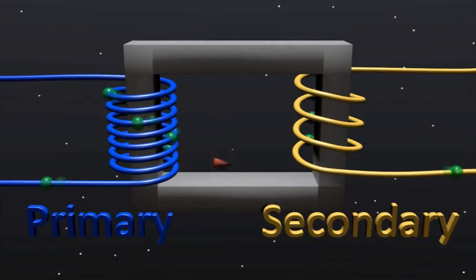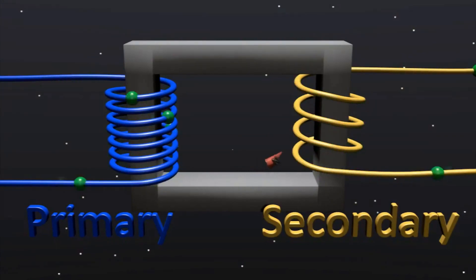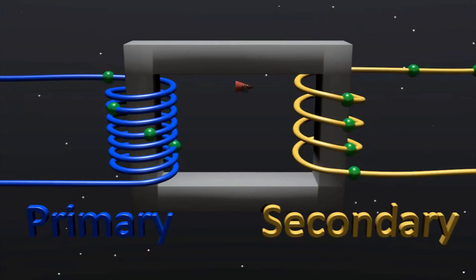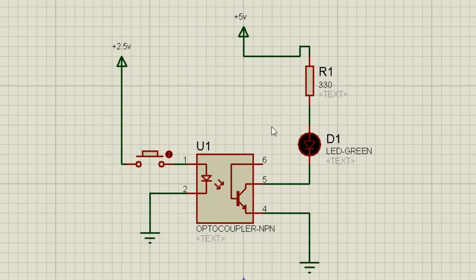We know that transformers can not only provide step-down or step-up voltage but also provide electrical isolation between the higher voltage on the primary side and the lower voltage on the secondary side. Transformers isolate the primary input voltage from the secondary output voltage using electromagnetic coupling, achieved using magnetic flux circulating within their laminated iron core. We can also provide electrical isolation between an input source and an output load using just light, by using a common and valuable electronic component called an optocoupler.